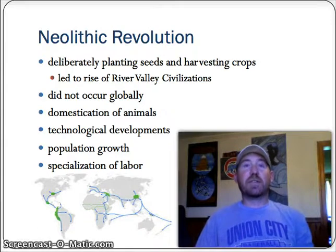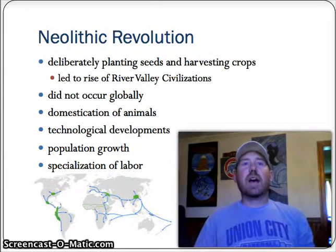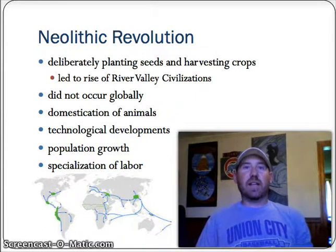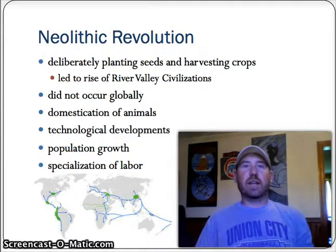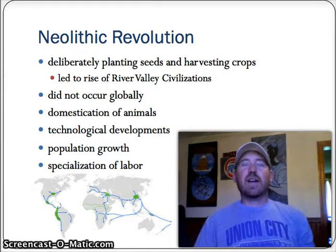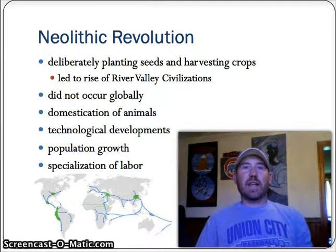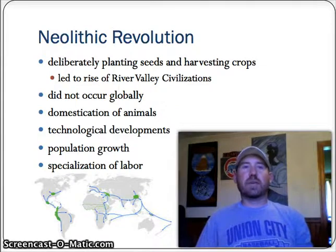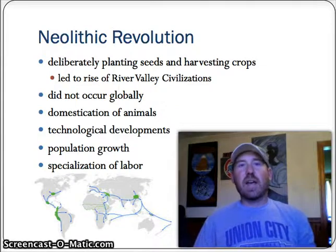Most specifically, we have the river valley civilizations: the Nile Valley in Egypt, the Indus Valley in South Asia or India, and the Yellow River Valley in East Asia or China. You need to know those locations on a map as well as what the Neolithic Revolution is.